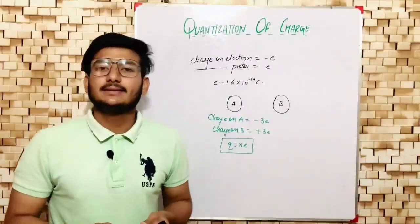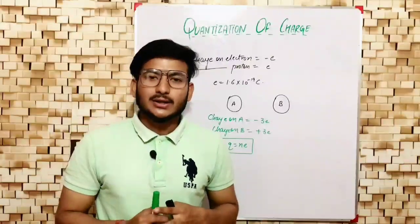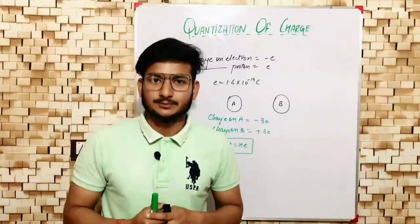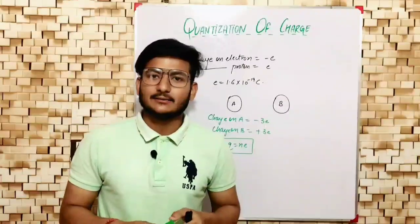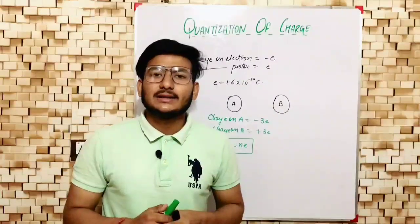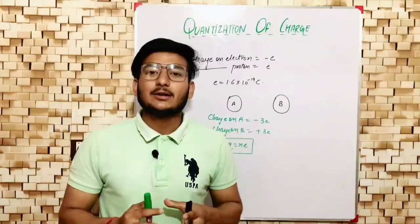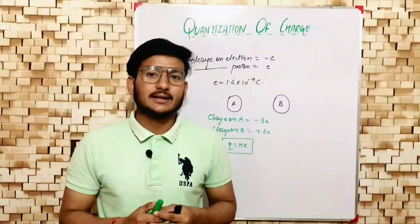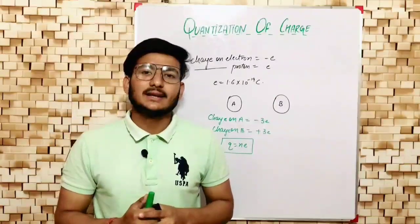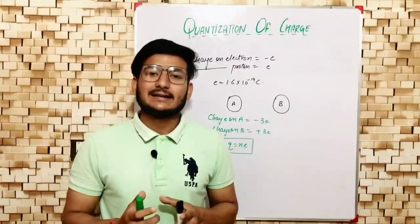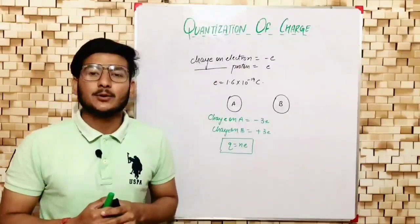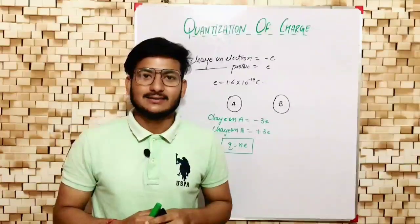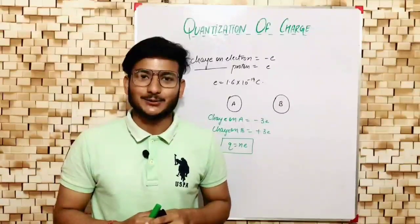This quantization condition is significant at the microscopic level, because in micro-particles the number of charges is small and they can be counted. But at the macroscopic level, where the number of charges is very large, they are not easily counted, so we use continuous distribution of charge instead of the quantization condition — which we will study in our next lecture. That's all for today; I hope you liked the video. Please like and share, and don't forget to subscribe. Thank you.